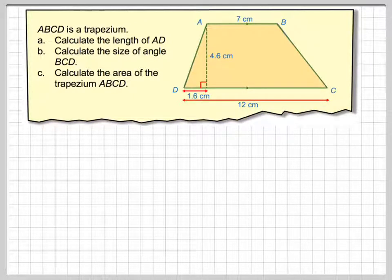In this video we're going to look at a trapezium. A trapezium is a shape that has two parallel sides and a height. We're going to use a little bit of trigonometry on it, and then we're going to finally calculate the area at the end.